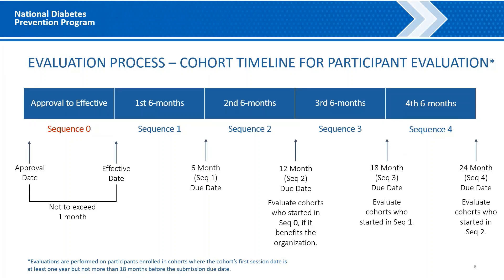Evaluation Process: Cohort Timeline for Participant Evaluation. This timeline is an example of who will be evaluated at the time the organization makes its required data submission. Evaluations are performed on participants enrolled in cohorts where the cohort's first session date is at least one year but not more than 18 months before the submission due date. We do not evaluate anyone who has already been evaluated. If you look at the 12-month point on the submission timeline — the point where Sequence 2 submission is made — you see that this is the first possibility for an evaluation. This will only be possible if at least one cohort held its first session after your approval date but before your effective date, Sequence 0, denoted here by the red Sequence 0.